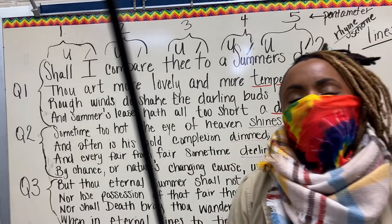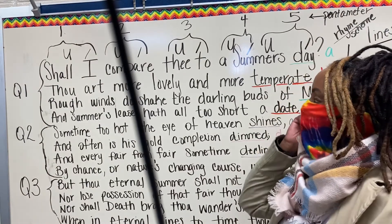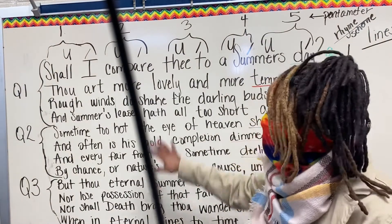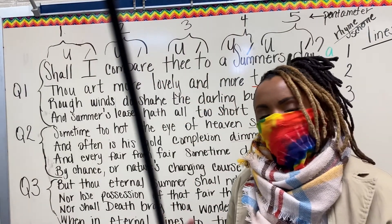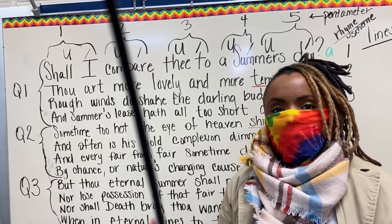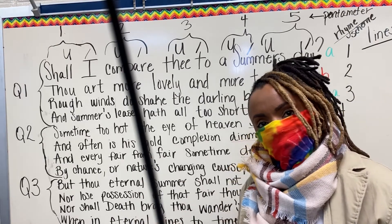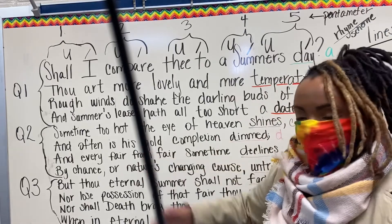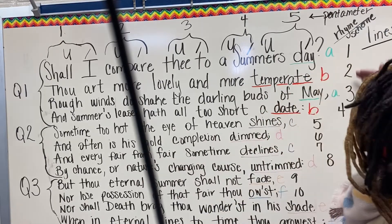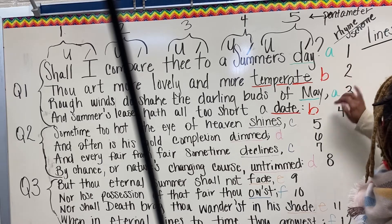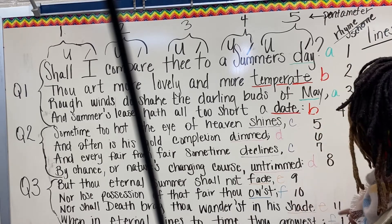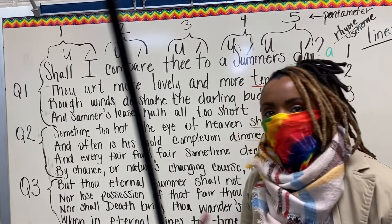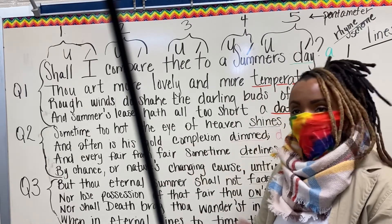Now you have all of these components written in a one-stanza poem. A stanza means it's just one part to it — some poems have three, four, five, however many the writer wants. But in the case of the Shakespearean sonnet, you always have one stanza, three quatrains, one couplet, 14 lines, the A, B, A, B, C, D, C, D, E, F, E, F, G, G rhyme scheme, and lastly it's written in iambic pentameter. And there you have a sonnet in a nutshell.